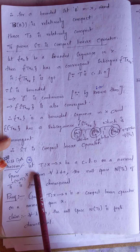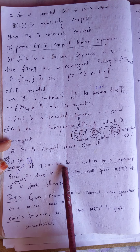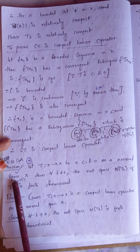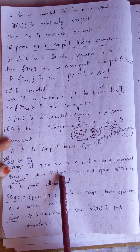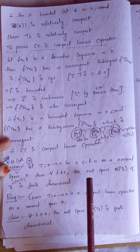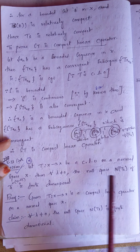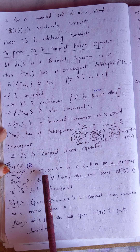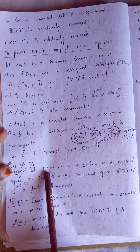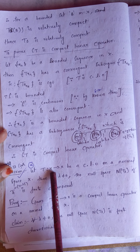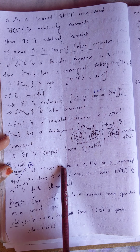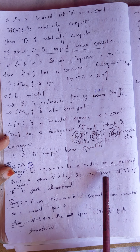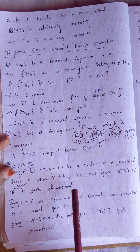We are proving the next theorem. Let T be a compact linear operator mapping X to X on a normed space X. Then for lambda not equal to 0, the null space N(T_lambda) is finite dimensional. Given T is a compact linear operator from a normed space X into X, we have to show that for lambda not equal to 0, the null space N(T_lambda) is finite dimensional.